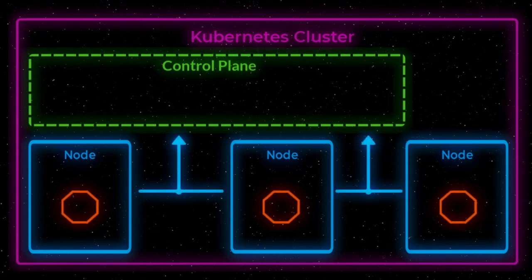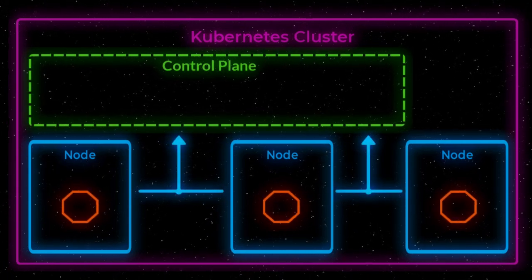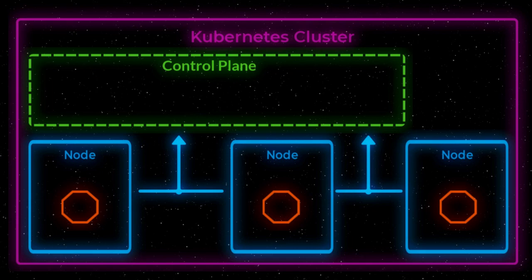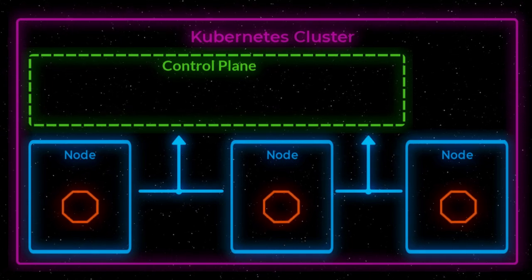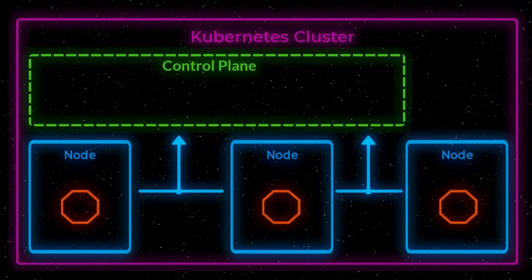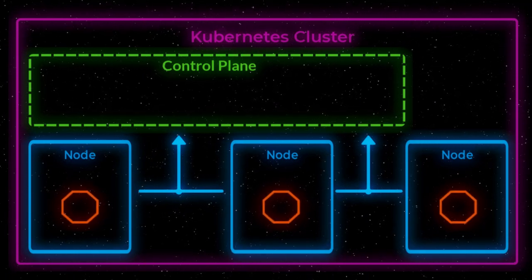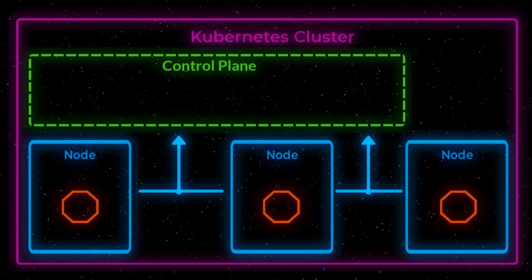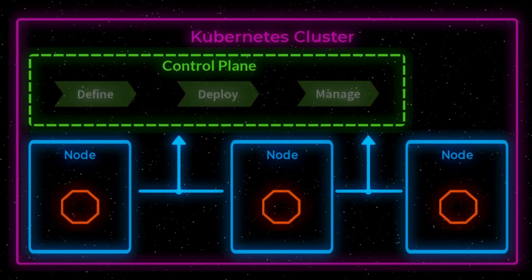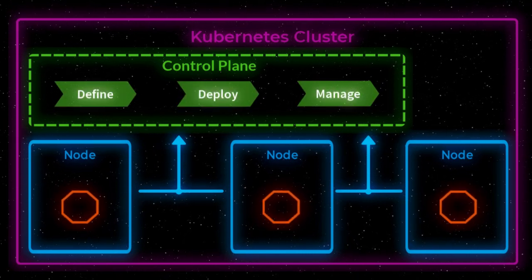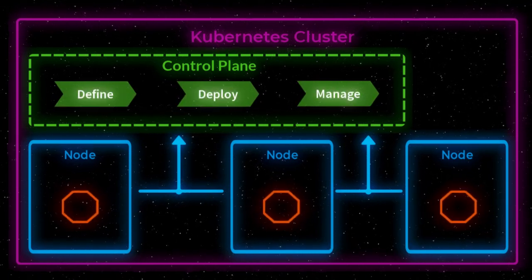The control plane is the container orchestration layer, responsible for not only managing the nodes and pods, but also exposing the API and interfaces to define, deploy, and manage the container lifecycle.